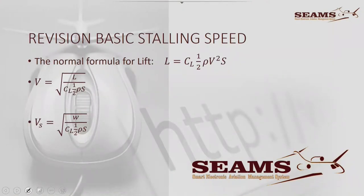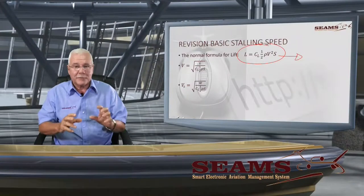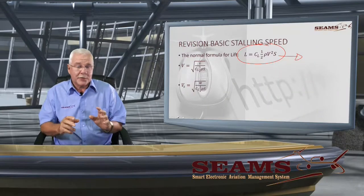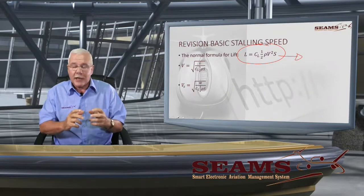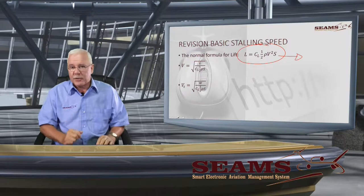Just a little bit of revision first. Basic stalling speed. Remember: lift equals coefficient of lift, half rho V squared S. This is the one you should engrave. The lift formula is really the basis from where we work out a lot of stuff, and if you really understand it, you can really operate your aircraft.